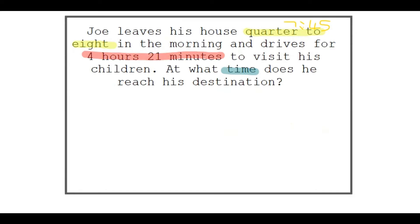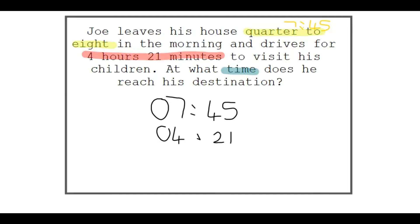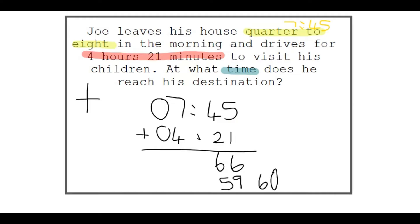I'm going to write my time down and remember to add zeros as placeholders wherever needed. 4 hours 21 minutes is 4 hours and 21 minutes. Why do I add placeholders? Because you have 2 values by the hours and 2 values by the minutes. So if you only have 1 value — say 4 hours and 2 minutes — you have to write 02 with a zero in front. Now let's add: 5 plus 1 gives you 6, and 4 plus 2 gives you 66. This is a problem, because minutes only go up to 59, and once it reaches 60 minutes, that's actually 1 hour.